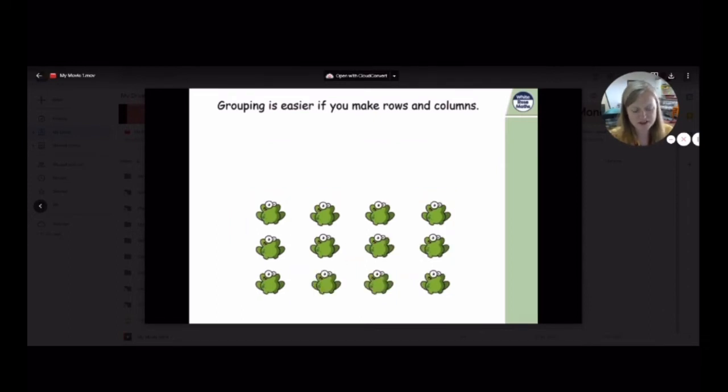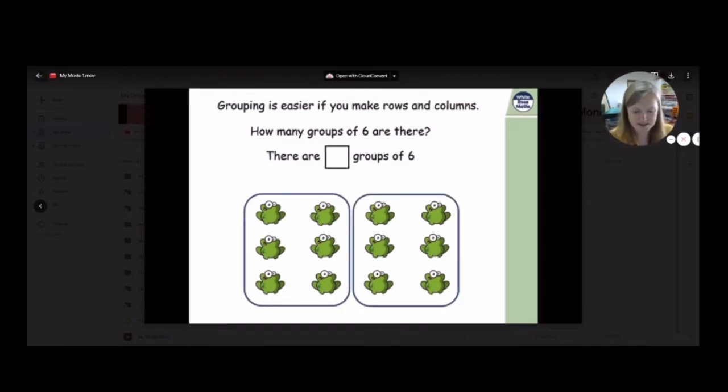What if we were to make groups of six? How many groups of six are there? Well, you know that three plus three is equal to six. So, you can see there is one group of six on the left and a second group of six on the right. How many groups of six do we have? That's right, two groups of six. Brilliant.